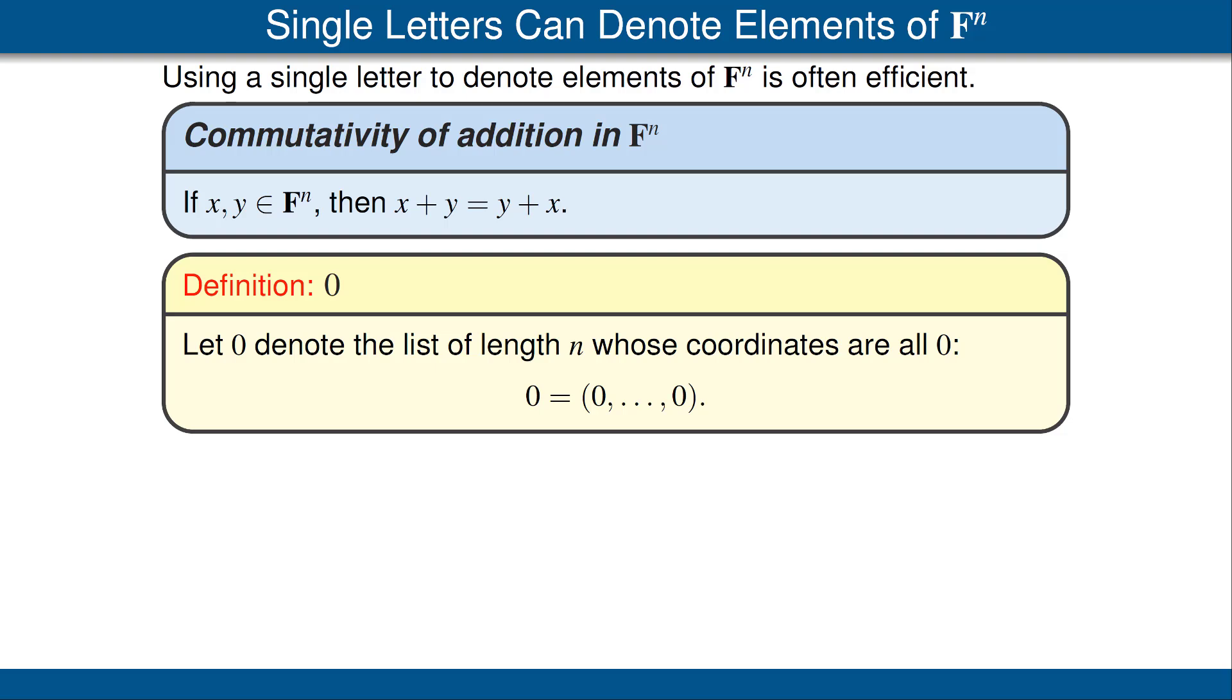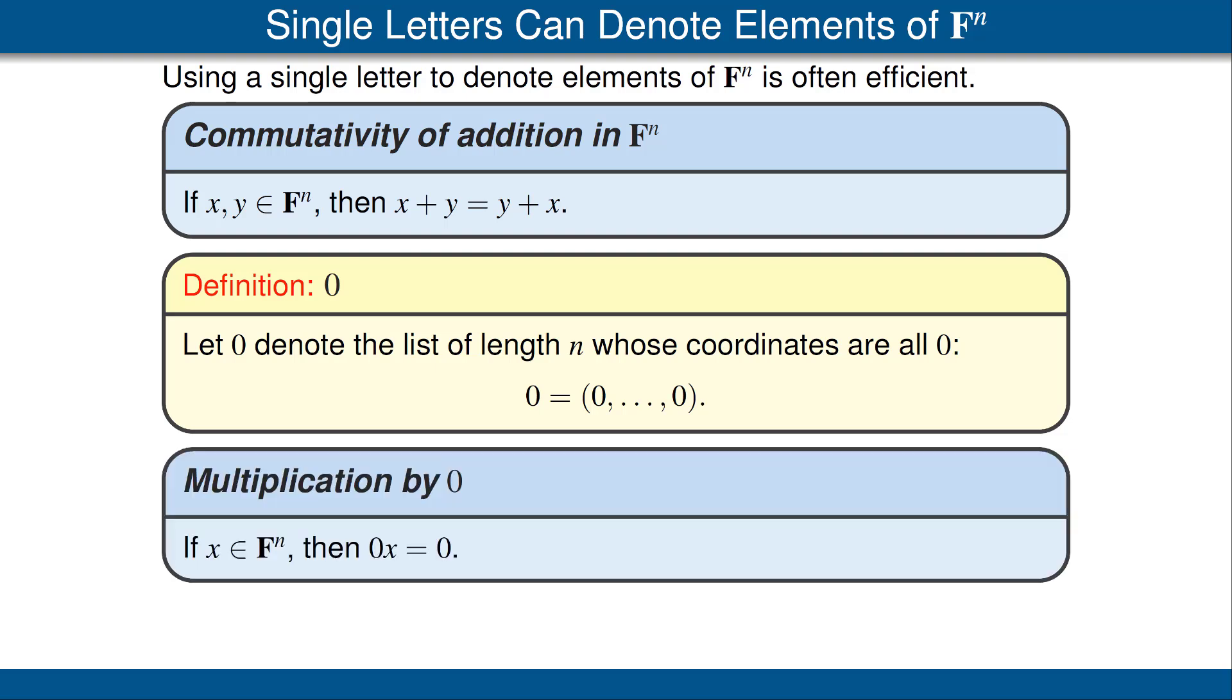The symbol 0 gets used in multiple ways in linear algebra. For example, 0 can denote the element of F^n consisting of a list of n zeros. This means that the symbol 0 is ambiguous, but it should always be possible to tell which meaning is intended from the context.